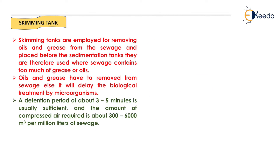The next unit is the skimming tank. We use a skimming tank in the treatment process to remove oil and grease from the sewage, which is why it is placed before the sedimentation tank. When sewage contains too much grease or oil, we need a skimming tank for removal of oil and grease.